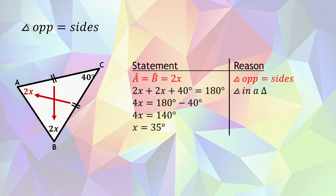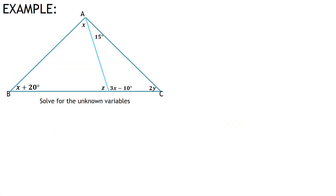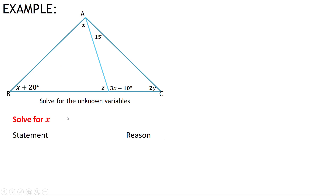I'm going to show you an example — take this down in your books, pause the video and copy it. I'm going to start by working out x. I can't use angles in a triangle here because I've got an x and a z in this triangle, and in the full triangle there's an x, an x, and a y. So I'm definitely not working with angles in a triangle. I can't use angles opposite equal sides because it doesn't tell me any sides are equal. So I must use exterior angle of a triangle.